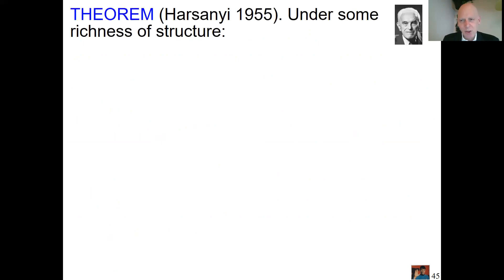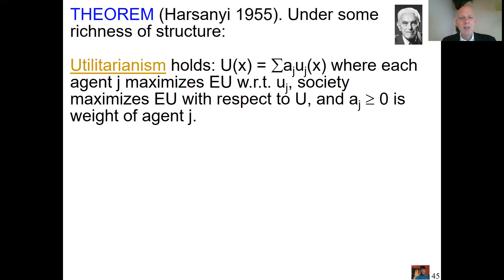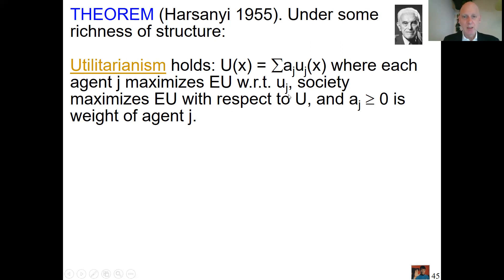Harsanyi showed, assuming some technical conditions we ignore for now, that utilitarianism is implied by Pareto optimality. First, let us define utilitarianism: in the utilitarian model, the social planner looks at all the individual utilities of all agents and takes a weighted sum of those utilities. Here a_j is the weight or importance of individual j in society. So it is a weighted mixture of individual utilities, and society will maximize that. That is utilitarianism.